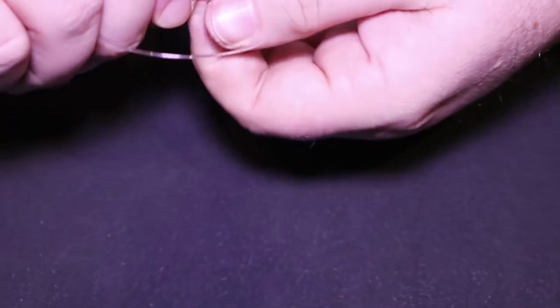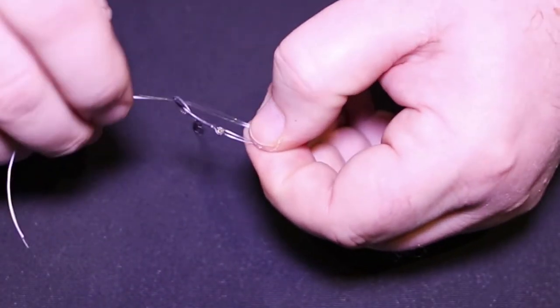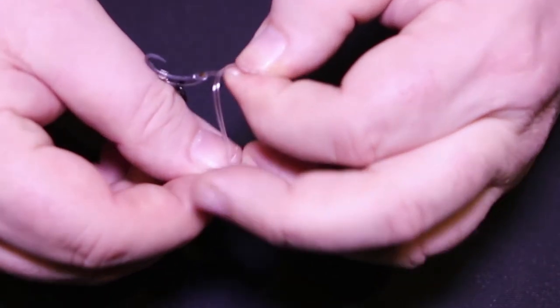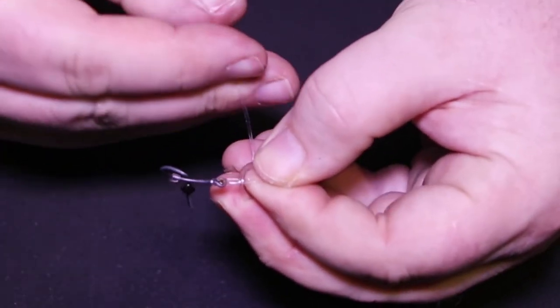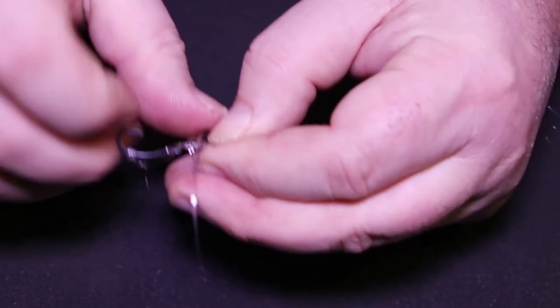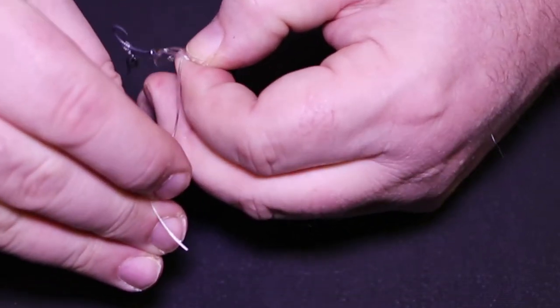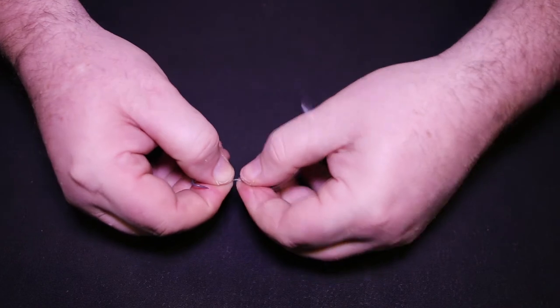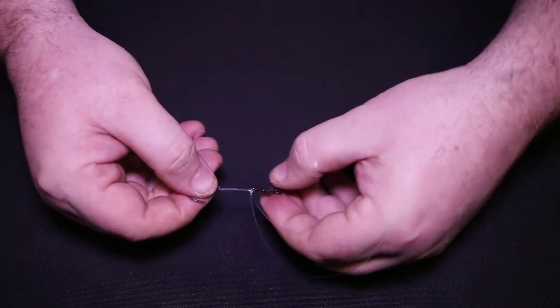It's an overhand knot, but you've got to make sure your tag ends are coming out the right way, as you can see—through and then up back towards your hand. Pull this tight as tight as you can. Again, use your teeth, draw it in.